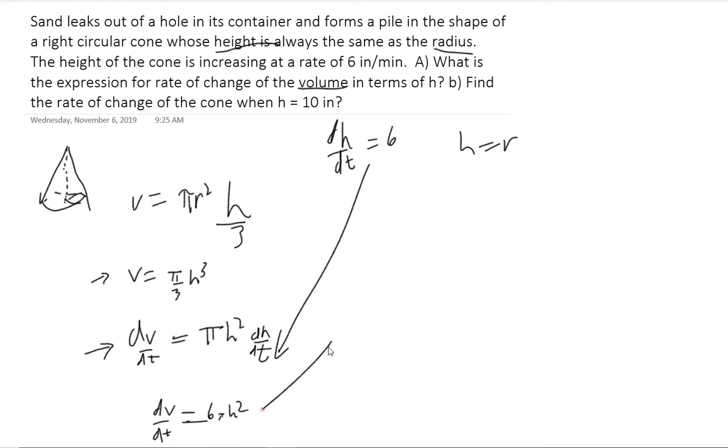Now part B: What is the rate of change of the cone when h equals 10? Well, this is as easy as just plugging in 10, because we have the general formula for the change in volume. You can only do this type of thing when the rate of change is constant. The height of the cone is constantly increasing at 6 inches per minute. In a lot of related rates problems, you're only given the rate of change at a particular moment in time. In that case, you can't have a general formula. In this situation we can. So we just plug in 10, 10², that's 100 times 6, 600π. That's the rate at which the volume is changing with respect to time, in inches per minute.